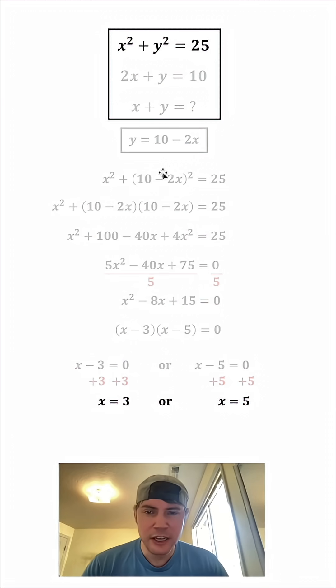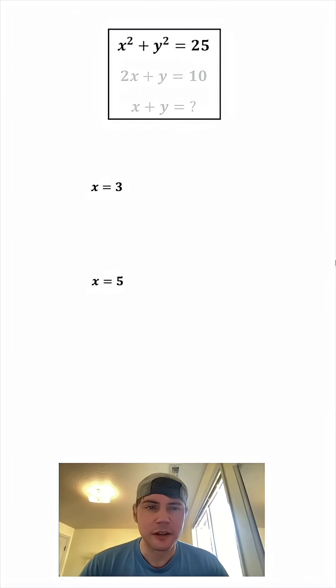So we don't really need any of this work anymore, and let's bring these up here. Since our goal is to figure out what is X plus Y, we want to find out our corresponding Y values. So let's use this 2X plus Y equals 10. We'll copy it down, solve for Y. In the place of this X, let's plug in 3. 2 times 3 is 6, let's subtract 6 from both sides, and we get Y equals 4.